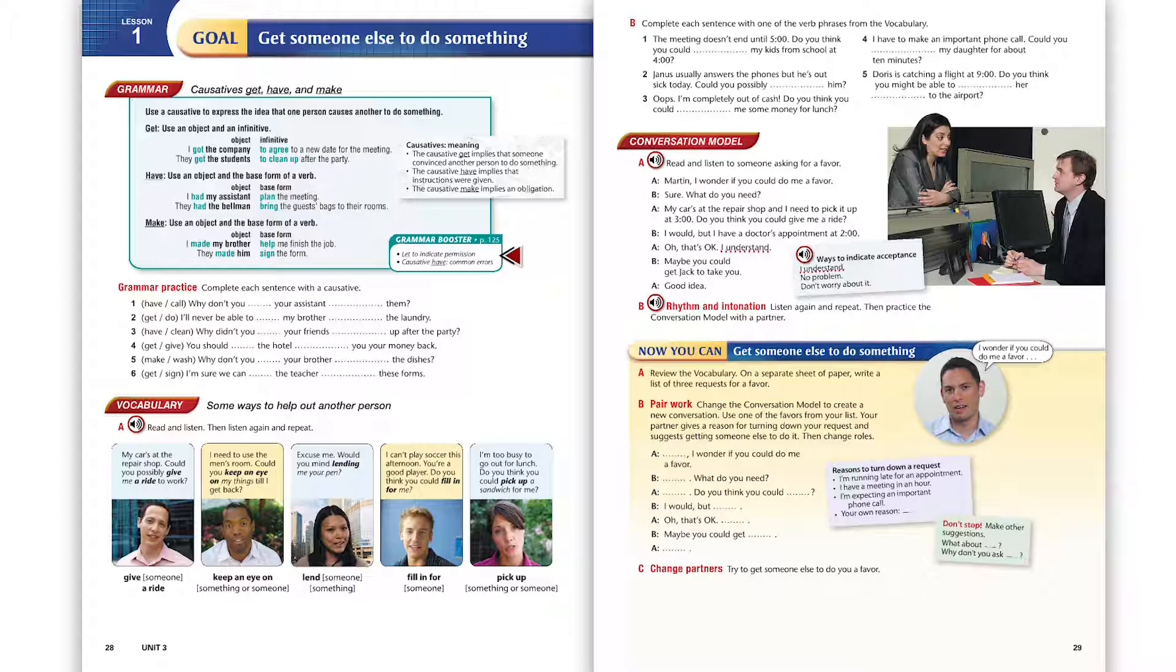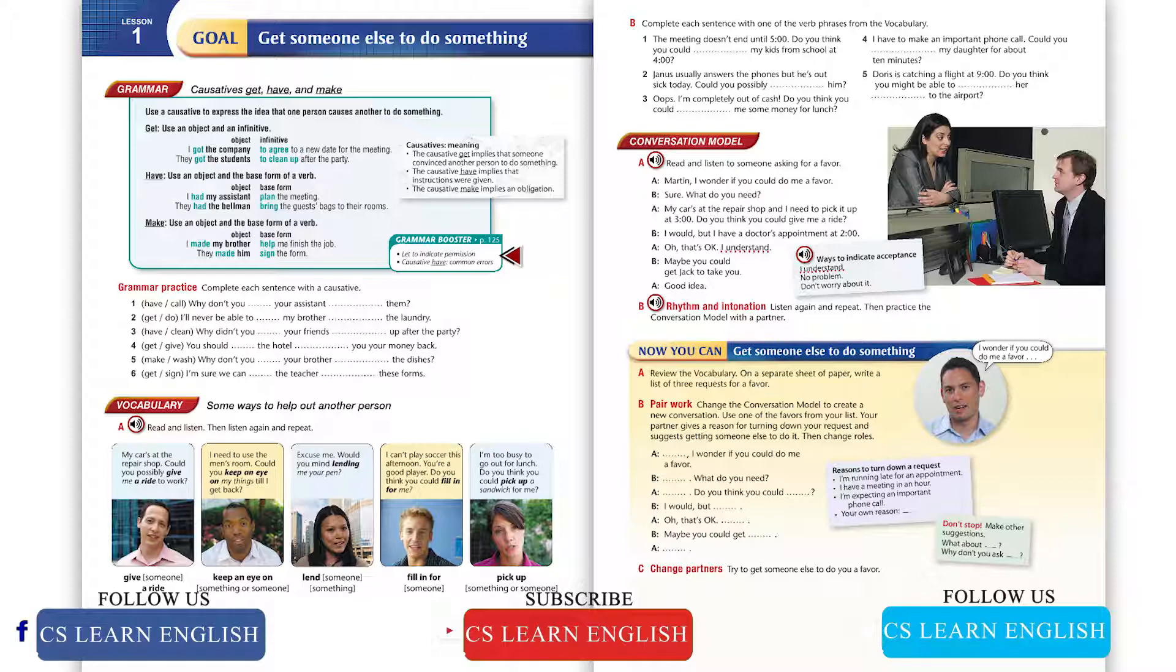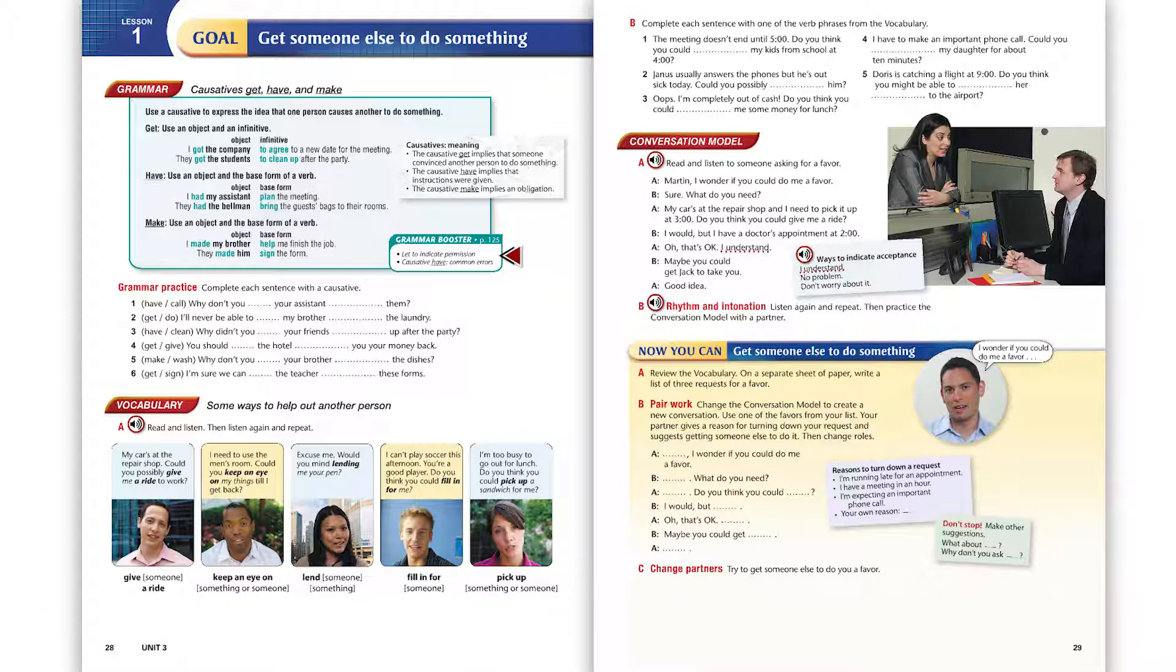Page 29, Conversation Model, Exercise B: Rhythm and Intonation. Listen again and repeat, then practice the conversation model with a partner.